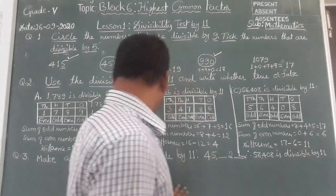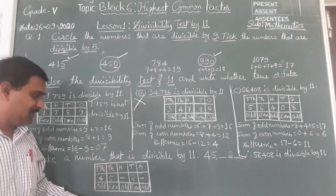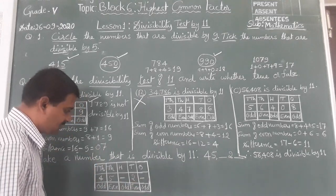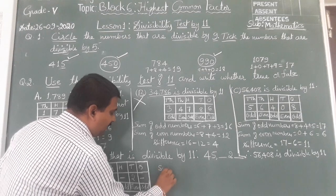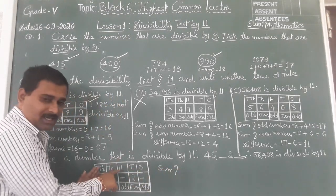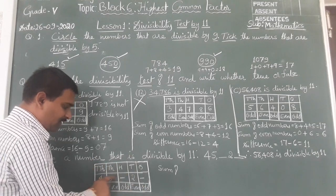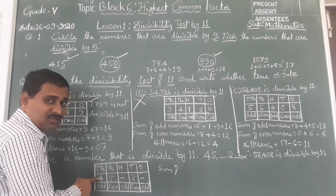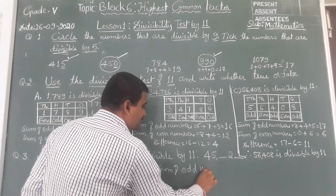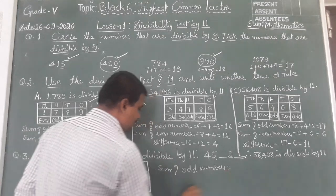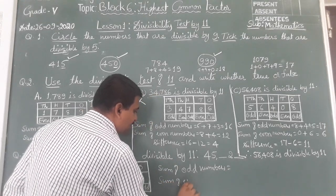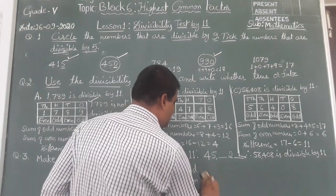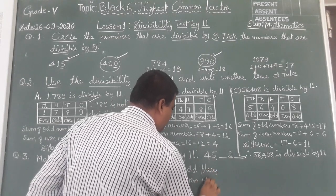Understood, children? For the second question: the first two numbers were not divisible by 11 because 4 and 7 are not divisible by 11, but 11 is divisible by 11. These are the second question answers. Let us see the last one — some digits are missing, but no problem, we will find them. Write the given number in the place value chart: we have 4 and 5 given; the 1's and 10's places are missing.